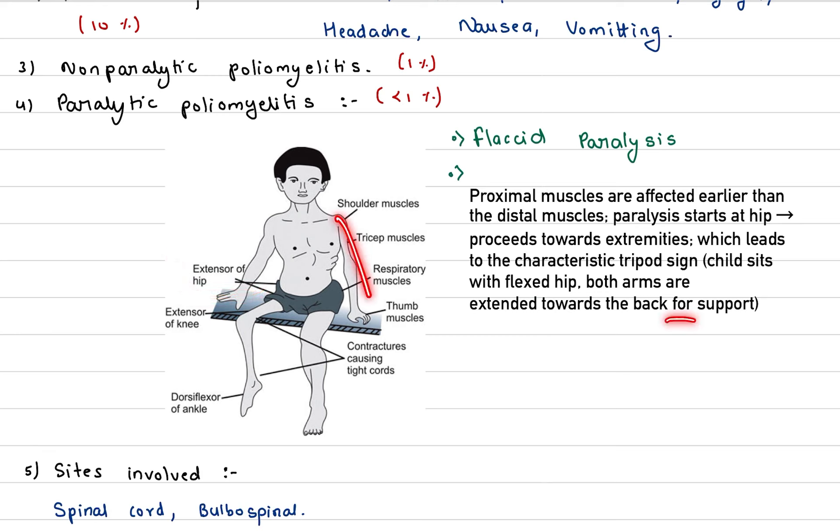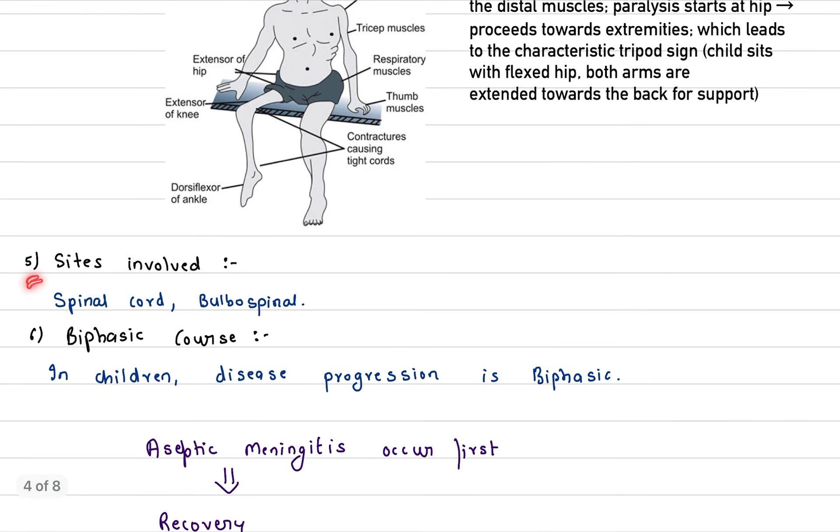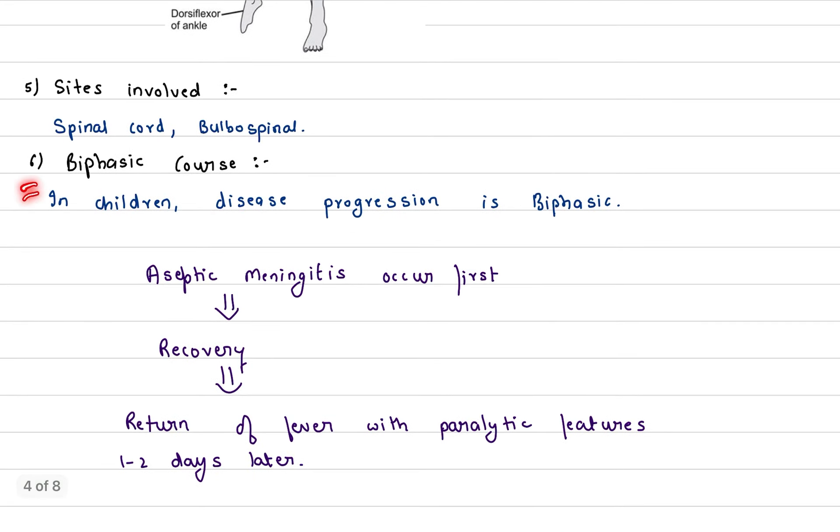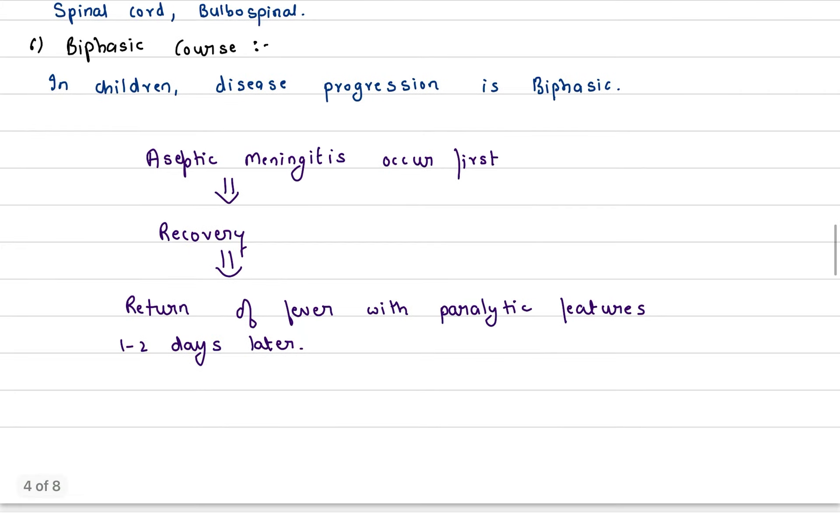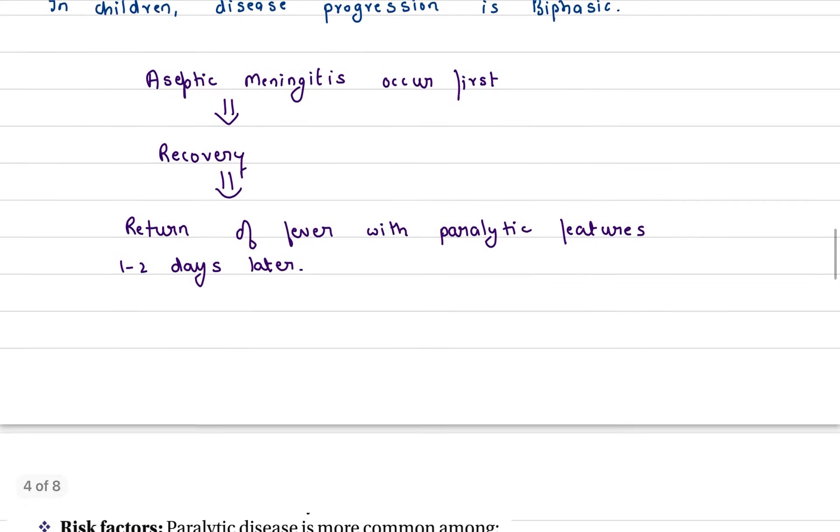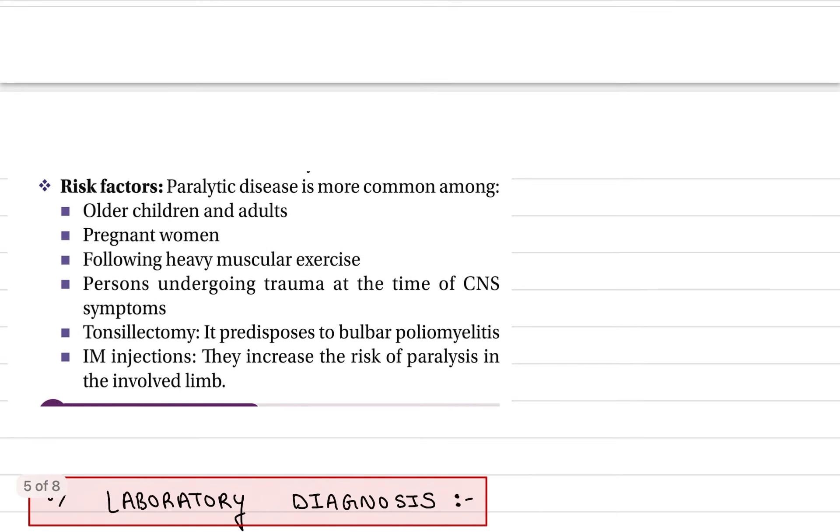Proximal muscles are affected earlier than the distal muscles. Paralysis starts from the hip and proceeds towards extremities, which leads to a characteristic tripod sign, which is when the child sits with flexed hip, both arms are extended towards the back for support. Sites involved are spinal cord and bulbar spinal. The disease progression is biphasic in children. Aseptic meningitis occurs first, then recovery. After return of fever with paralytic features 1 to 2 days later in children, biphasic course: aseptic meningitis first, recovery, and again paralytic features.